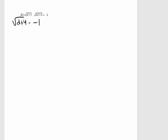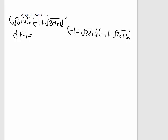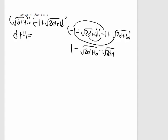One other example. Notice this example has two terms with radicals. The idea is I still want to get one of the radicals by itself, so I'm going to move the square root of 2d plus 6 to the right-hand side, then square both sides. On the left side that's just d plus 4, but on the right-hand side we are squaring a binomial. Foiling, we get 1 minus the square root of 2d plus 6 minus the square root of 2d plus 6, and then plus 2d plus 6.